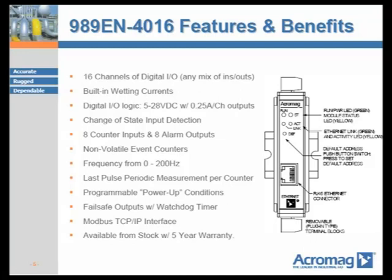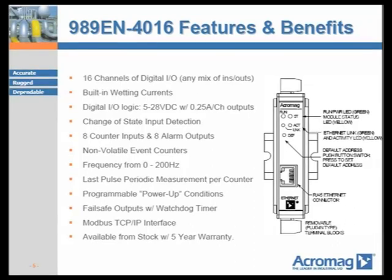Each channel includes built-in wetting current generators, which allow the 989EN to excite dry contacts and extend their usable life by cutting through oxidation that can build up on contacts and cause failure. The 989EN is a completely solid state device with no mechanical moving parts. It can sense or switch dry contacts, proximity switches, and support 5V, 12V, or 24V DC logic systems. Change of state input detection is available for all 16 channels, meaning momentary push buttons can be wired to all channels and the host system can read a special Modbus register to detect changes between polling cycles — ideal for triggering or stopping processes.